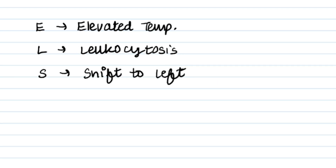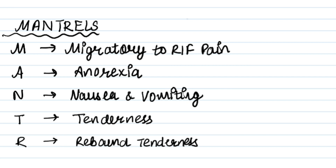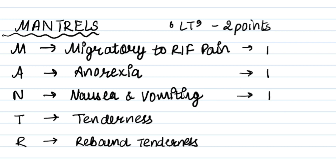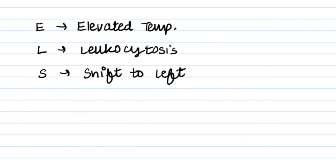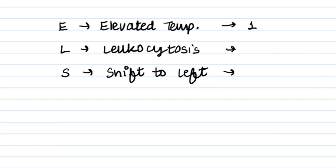Only two symptoms have two points and the other symptoms have one point each. The two letters with two points are L and T. Migratory right iliac fossa pain is one point, anorexia is one point, nausea and vomiting is one point, tenderness is two points, rebound tenderness is one point, elevated temperature is one point, leukocytosis is two points, and shift to left is one point. The total score is 10 points.